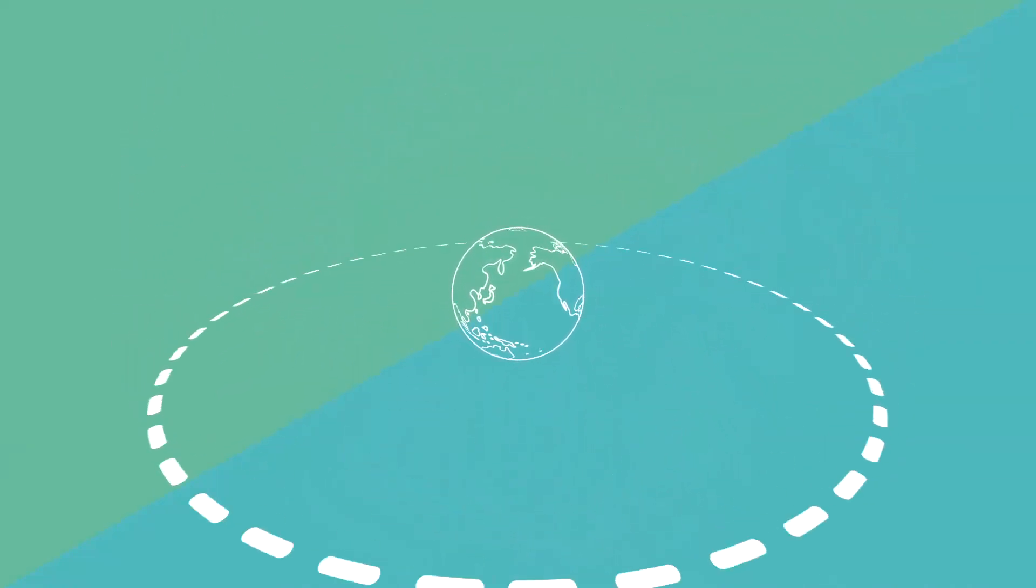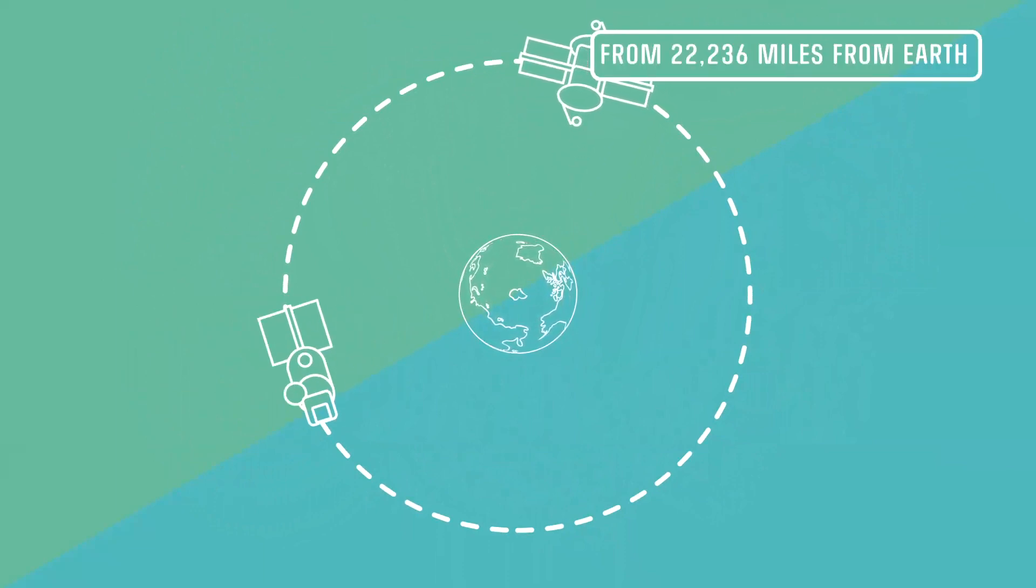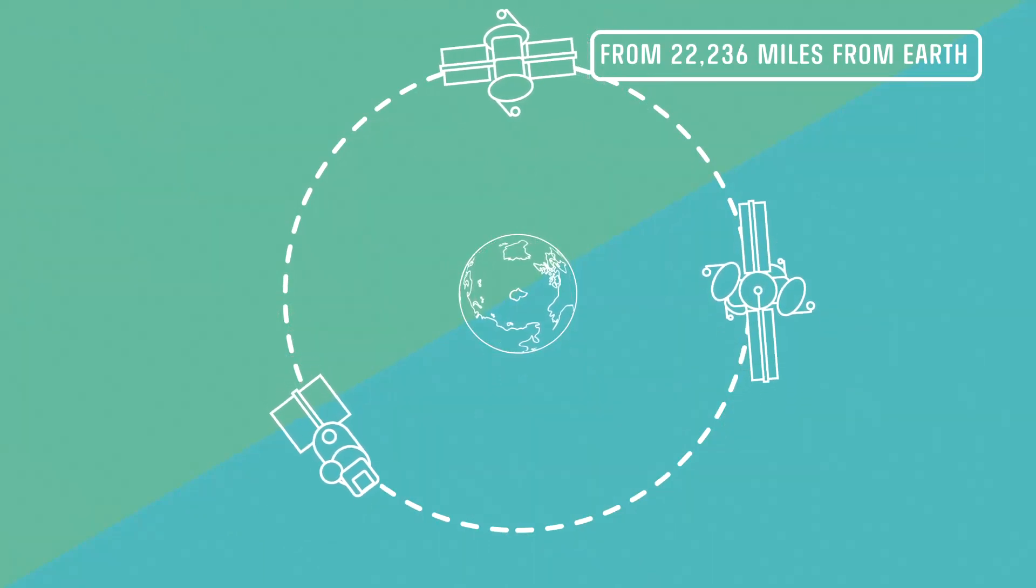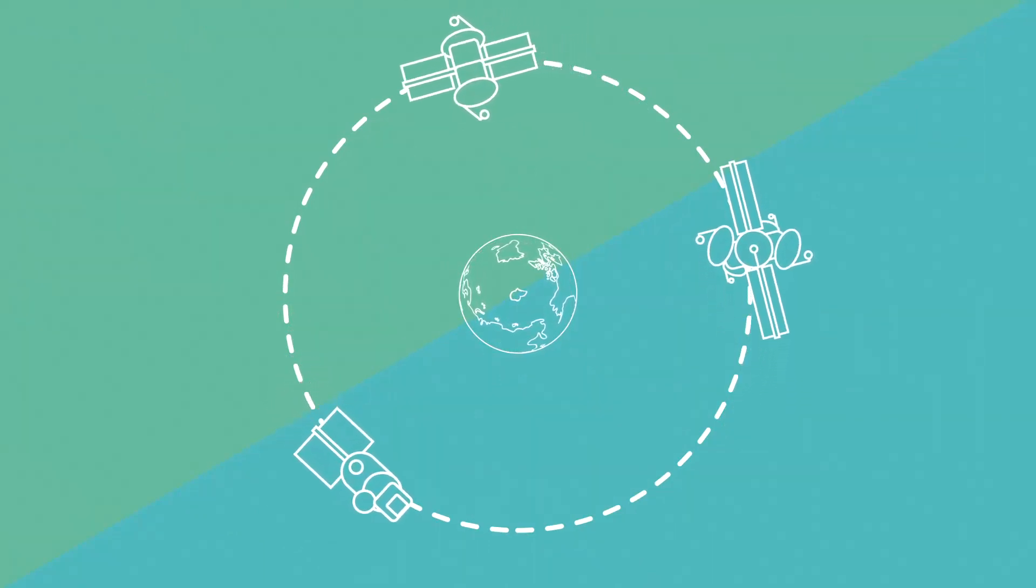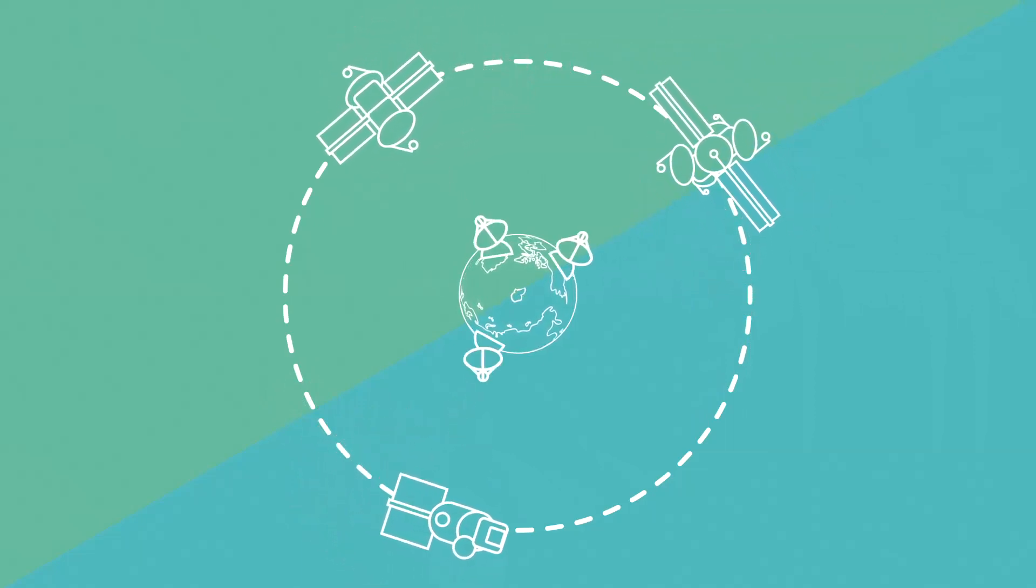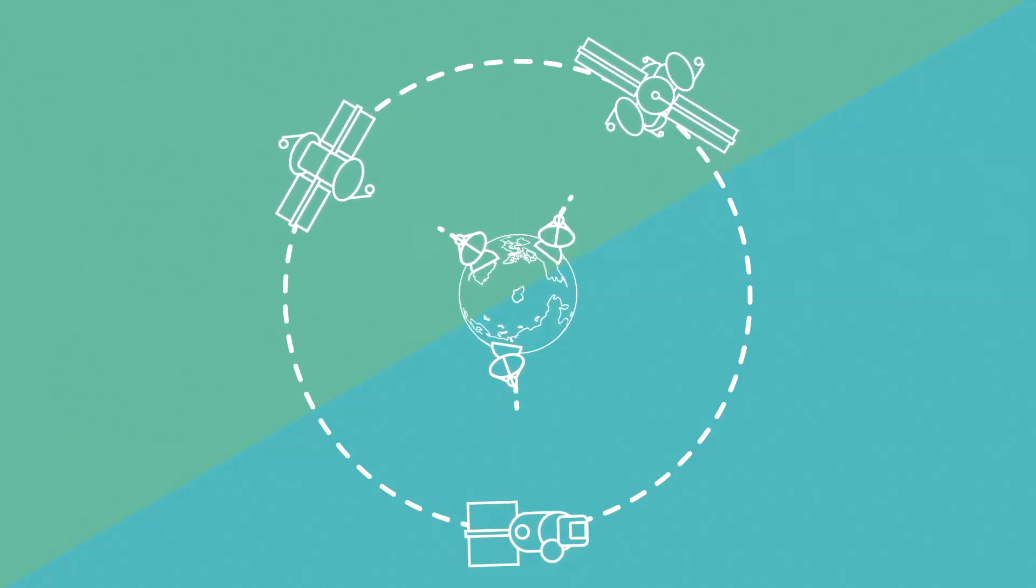Finally, there is geosynchronous orbit. In this orbit there are communications, weather, and broadcast satellites that orbit Earth exactly once per day. When you look up at the sky, these satellites always appear to be in the same place. That's why antennas that communicate with these satellites only have to point in one direction.